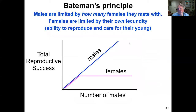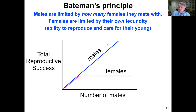The idea of sexual selection — particularly female choice — is based largely on Bateman's principle: males are limited by how many females they mate with, while females are limited by their own fecundity and ability to care for young. Looking at total reproductive success versus number of mates, males show a continuing linear relationship, while females hit an asymptote where additional matings no longer contribute to total reproductive success.